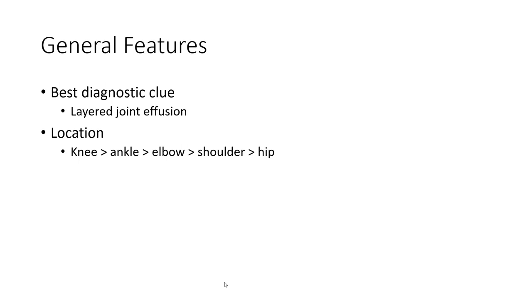General features. Best diagnostic clue for hemarthrosis is a layered joint effusion. Location hierarchy by frequency: knee, more than ankle, more than elbow, more than shoulder, more than hip.